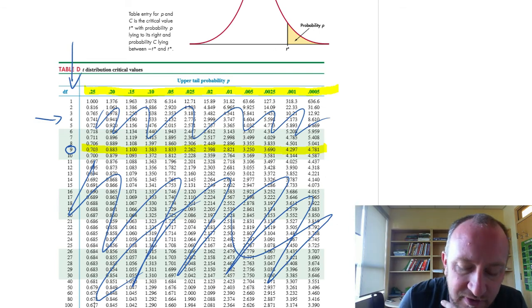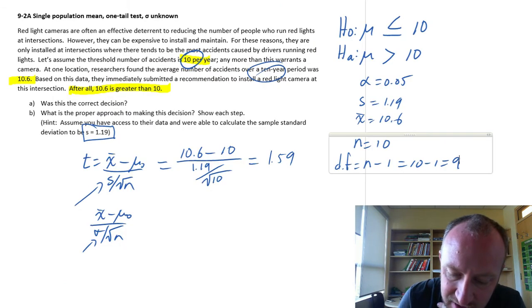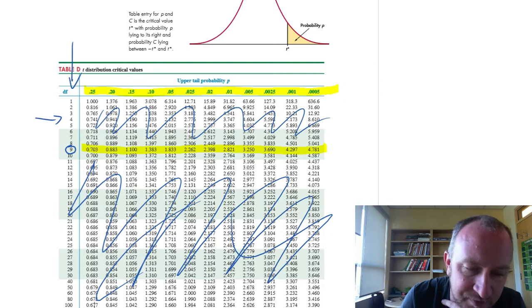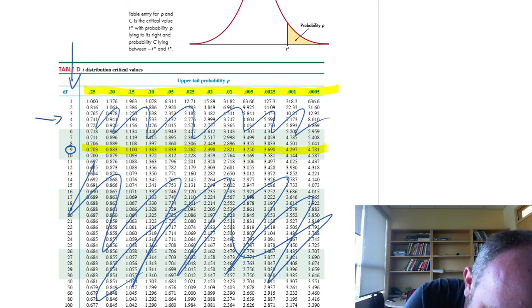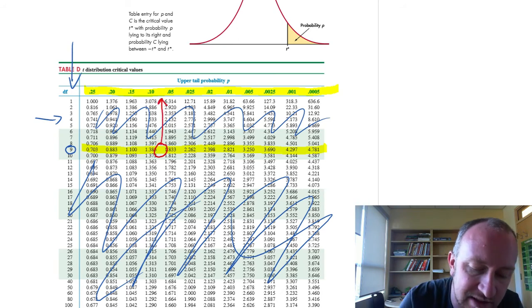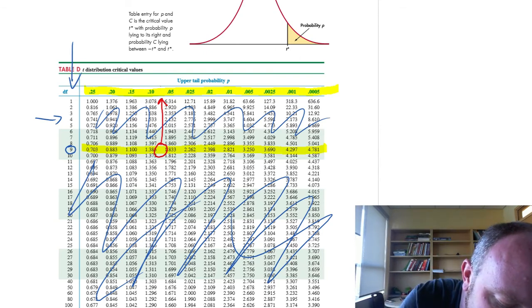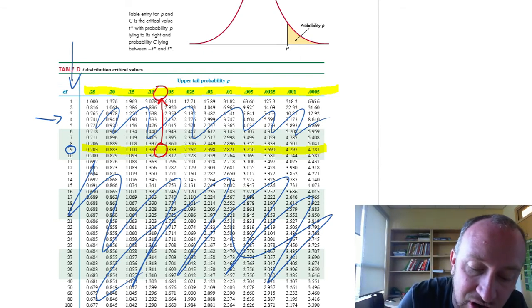So we want to find our test statistic, which was 1.59. So if I go through, 1.59 is somewhere in between these two values here. Which means our probability is somewhere between 0.05 and 0.1.